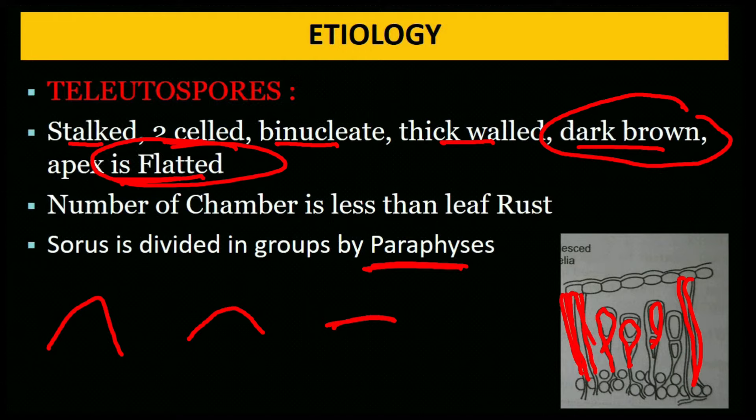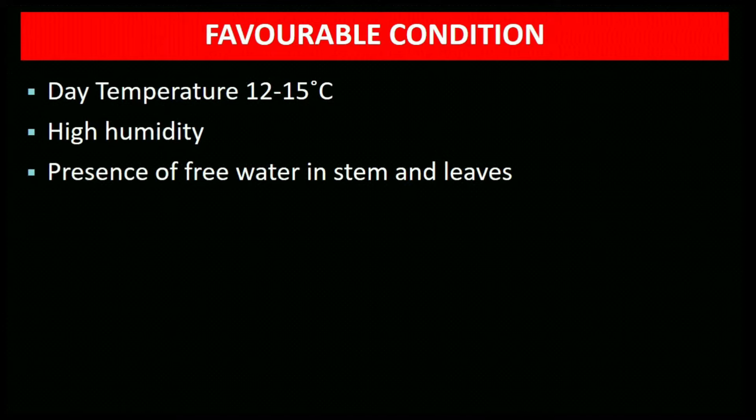Favorable conditions for yellow rust: day temperature 12–15°C, high relative humidity, presence of free water on stems and leaves, and high dose of nitrogenous fertilizer.